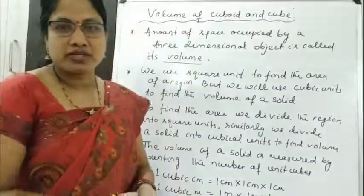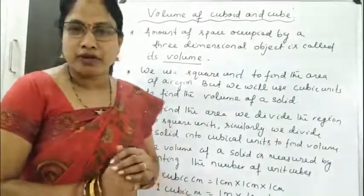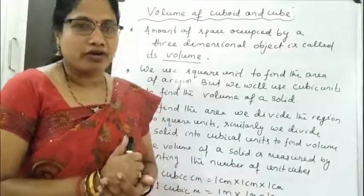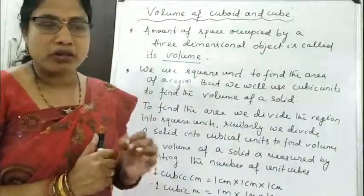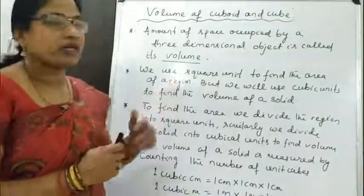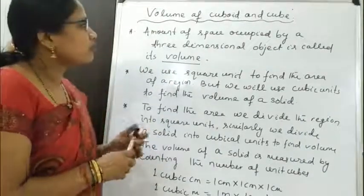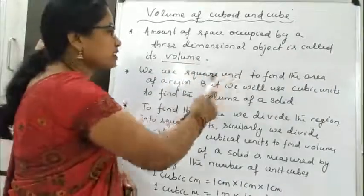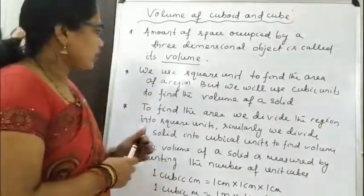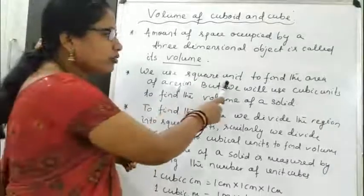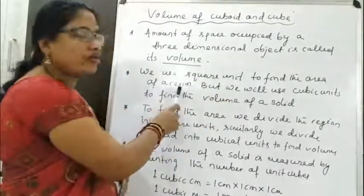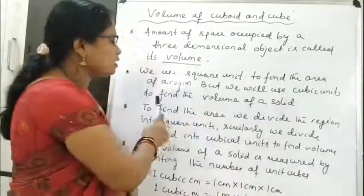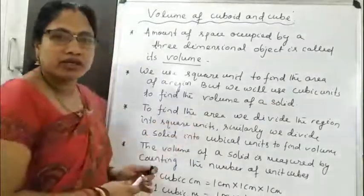First we shall discuss about volume of cuboid and cube. Before discussing about volume, you have to know some important points. What is volume? The amount of space occupied by a three-dimensional object is called its volume. We use square units to find the area of a region, but we use cubic units to find the volume of a solid.